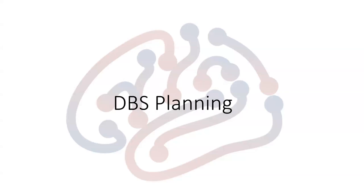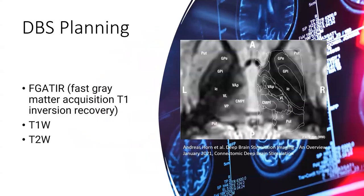Today I'm going to show you DBS planning using DSS Studio. The data we are going to use could be FGATRR, could be T1 or T2 image. As long as we have a structural image, DSS Studio could use it for planning. You don't necessarily need to have a DWI, which is for fiber tracking. For DBS, DSS Studio will only take a structural image.